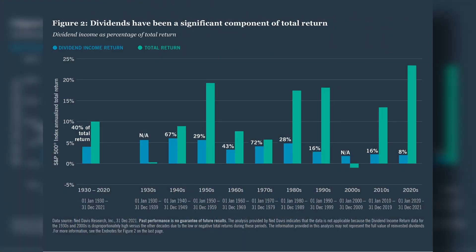Don't get me wrong, I like dividend-paying and income-producing investments, and we like incorporating them into a diversified allocation. In fact, dividends have been a significant component of total return. This chart by Ned Davis shows dividend income return (blue bars) compared to total return for the S&P 500 (green bars). From 1-1-1930 to 12-31-2021, 40% of the total return of the S&P 500 came from dividend income.